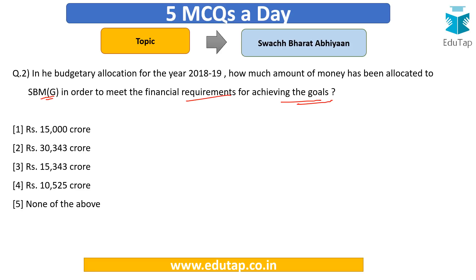Try and solve it, and do mention your scores in the comment section below to make the session interactive — you can also add information you think is relevant. Your options are: ₹15,000 crore, ₹30,343 crore, ₹15,343 crore, ₹10,525 crore, or none of the above.